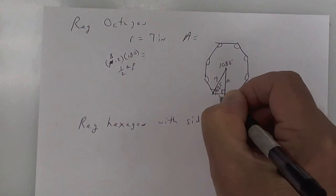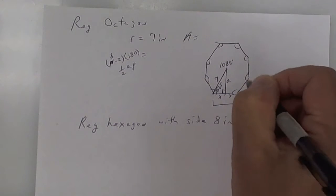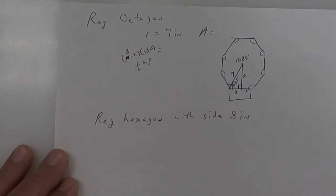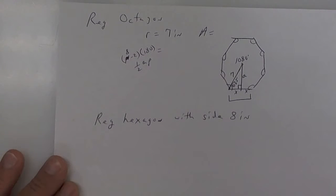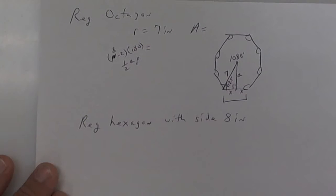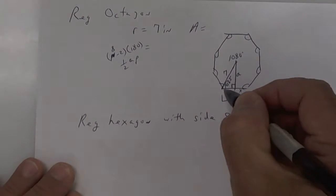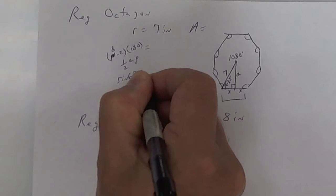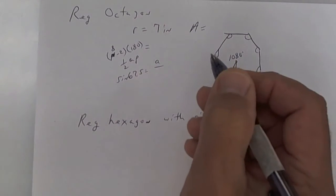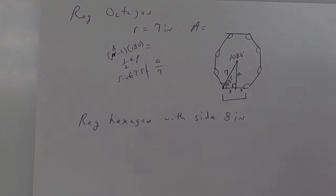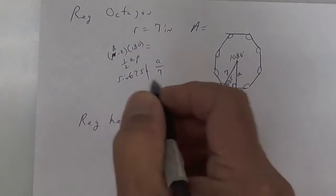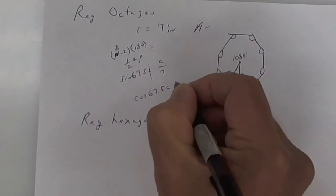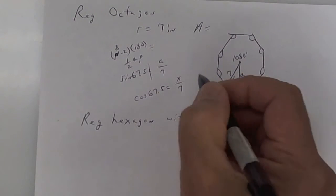We need to find the apothem, and we need to find x and then double x to get the side for the perimeter. To set up the trig for the apothem, it's going to be opposite over hypotenuse. So the sine of 67.5 equals the opposite over the hypotenuse, which is seven. To get x, that's adjacent over hypotenuse, so the cosine of 67.5 equals x over seven. Work both of those out.